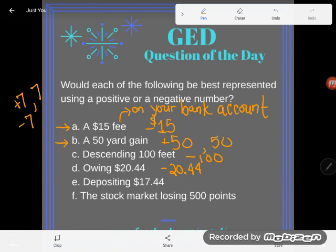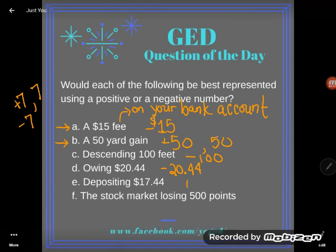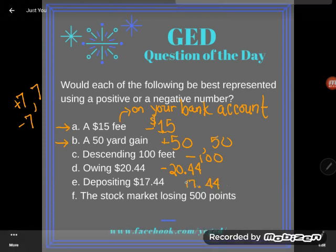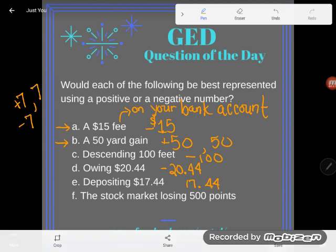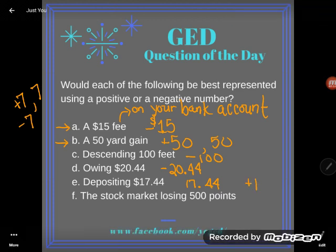Now, if you deposit $1,744, let's think about the effects on your bank account. You are going to go up $1,744, and so that would be a positive 1,744 — or just plain old 1,744. Same thing.